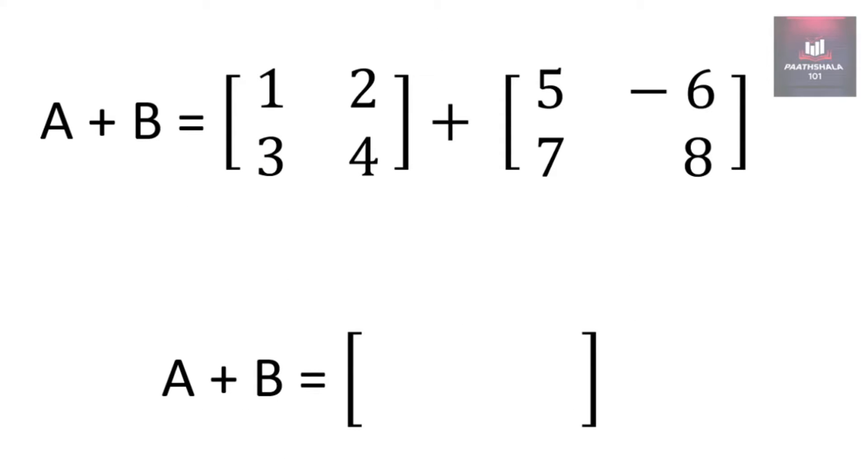Now addition of two matrices A plus B will be calculated as follows. In the resultant A plus B, first row first column will be equal to addition of first row first column of A and first row first column of B. So it will be 1 plus 5, that is 6.